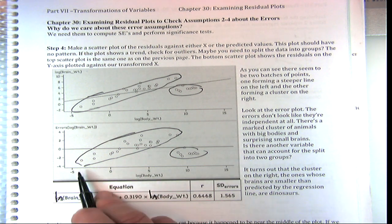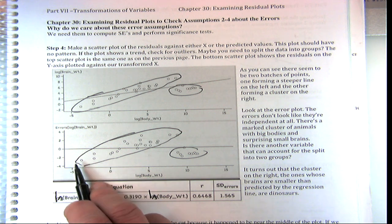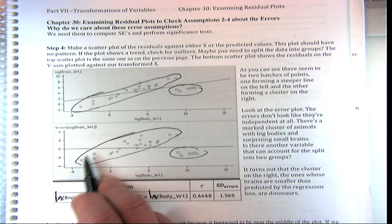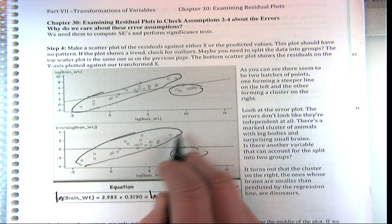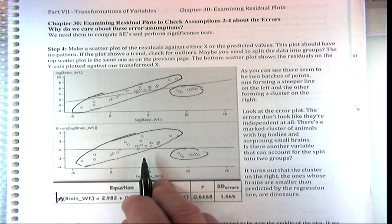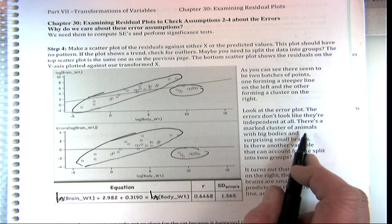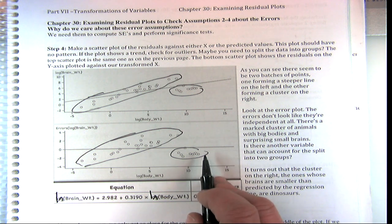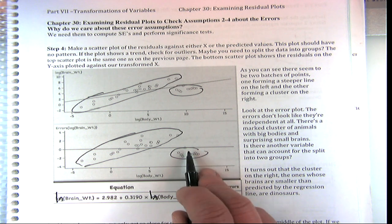The errors don't look independent. If you have a very low body weight, you can predict the errors — you know the next errors are going to be negative. And if you get really high body weight, they're also going to be negative. Semi-high, there are positives. It just does the best fit right in the middle. There's a marked cluster of animals with big bodies and surprisingly small brains — very big bodies — and they all have negative residuals except for one.